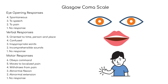The Glasgow Coma Scale uses a scoring system where points are given for eye-opening responses, verbal responses, and motor responses. Points are given for specific function in each area in order to determine an overall score.